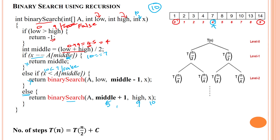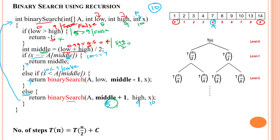We then make a recursive call: binary_search(middle + 1, high, x), which is binary_search(5, 9, 10). In this recursive call, low = 5 is not greater than high = 9, so we calculate the new middle: (5 + 9) / 2 = 7. We check if x equals a[middle]: a[7] is 10, and 10 equals 10 is true, so we return the middle index. We have found the searching element 10 in the given array.